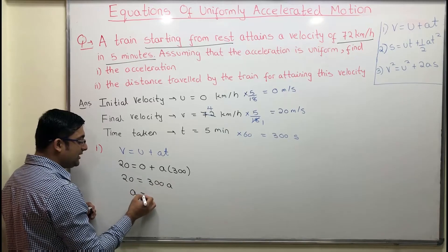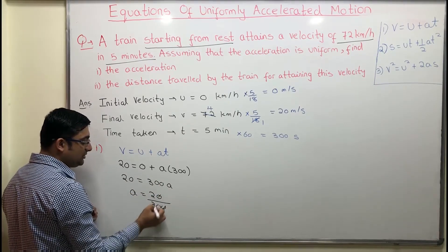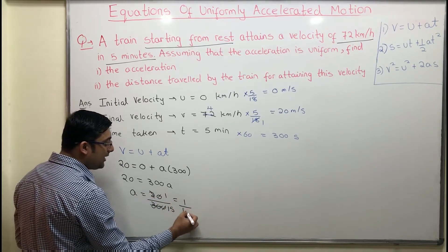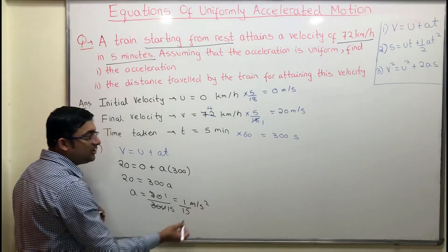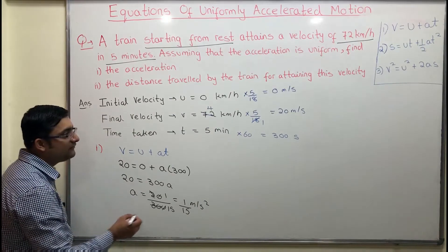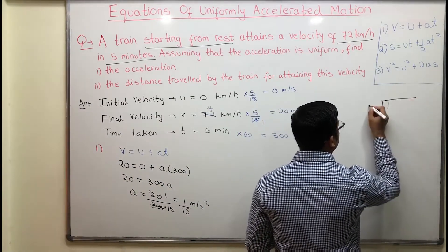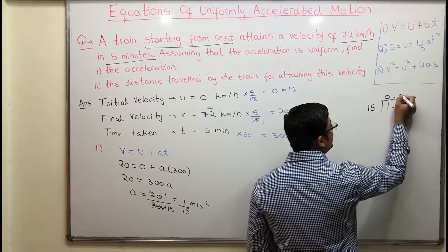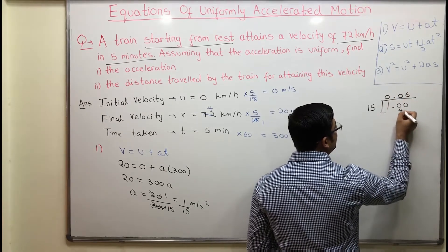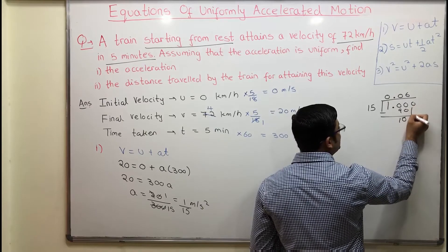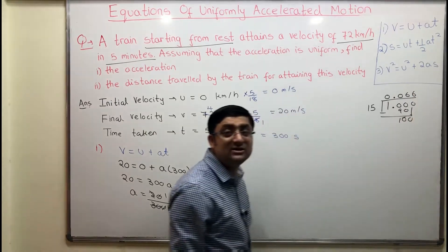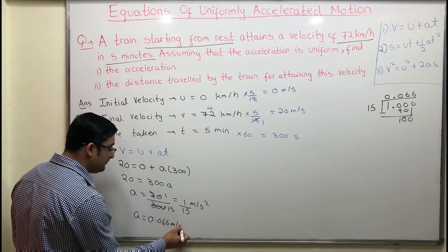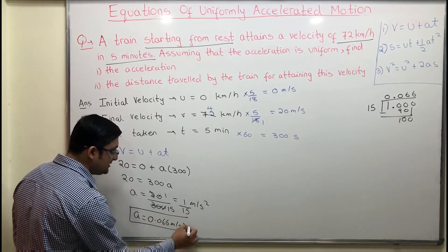Bringing 300 to the other side, a is equal to 20 divided by 300, which simplifies to 1/15 meters per second squared. Converting to decimal: 1 divided by 15 gives 0.066. So the acceleration is 0.066 meters per second squared. This is the answer to the first part.